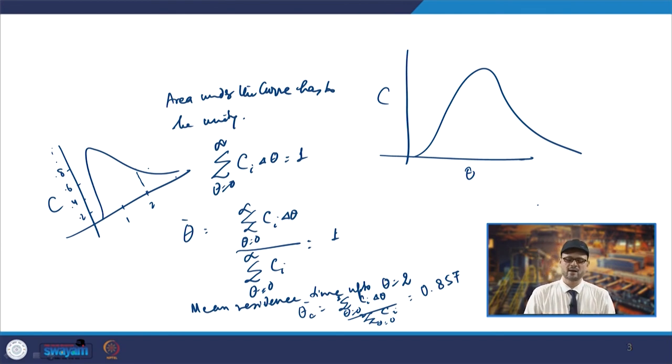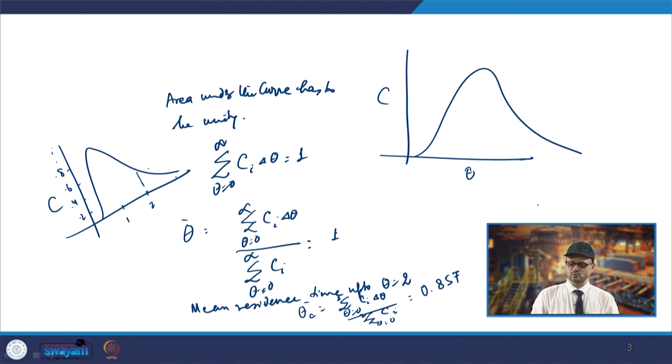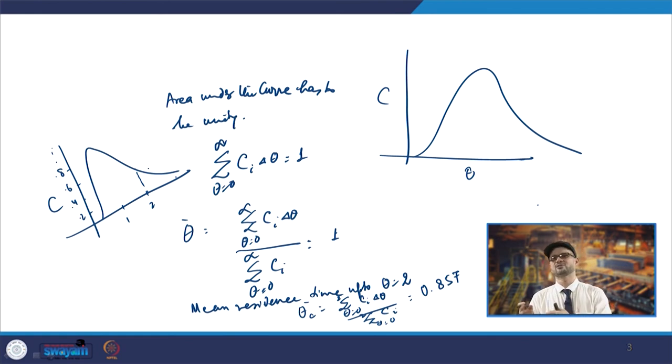These calculations can be better understood when we solve example problems. When experimental RTD data is available, the plug volume, mixed volume, and dead volume of the tundish can all be calculated. In future sessions, we will see how different C-curves are generated with and without flow modifiers, and how the different tundish volume fractions are computed.